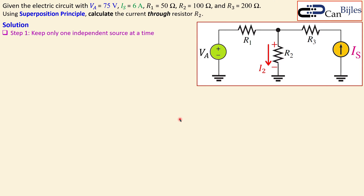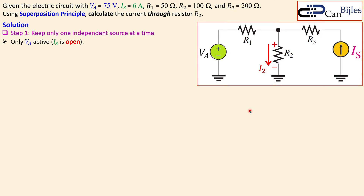Step one: keep only one independent source at a time. We have two independent sources, so we choose one of them and disable the others, and we will then see what kind of effect it has on this current I2. Now we only activate Va first.